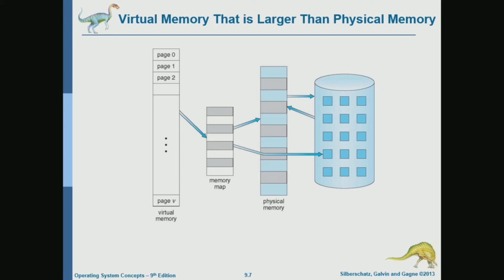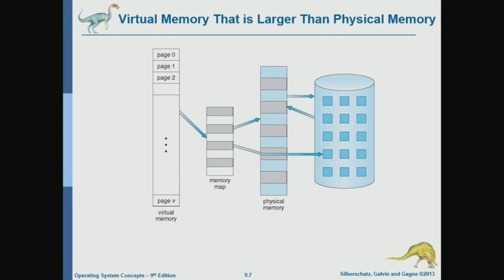If we look at the address space of a process — consisting of code segment, data segment, heap, and stack, with the heap and stack growing in different directions — there is a hole between heap and stack. In virtual memory, I don't have to allocate physical memory for this until it's needed. Virtual memory management gives the system a lot more flexibility in handling dynamic memory allocation.